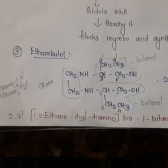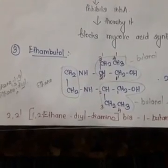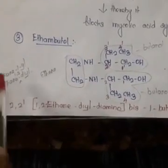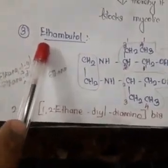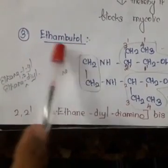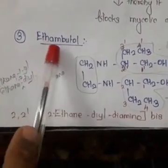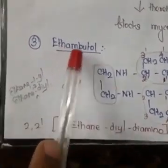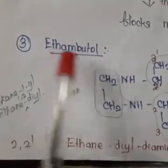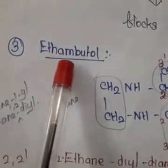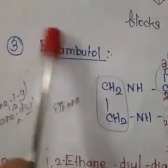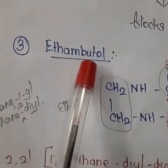We have already seen two drugs under anti-TB agents. Now we are going to see the third one, called ethambutol. From the name itself we can say: 'eth' is ethyl, 'am' is amino, 'butol' means butanol. So three components are present: ethyl, amino, and butanol.